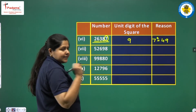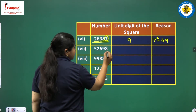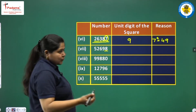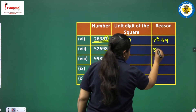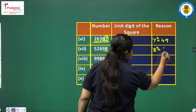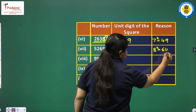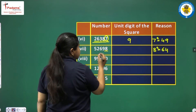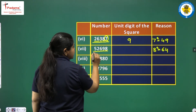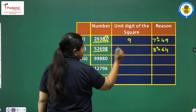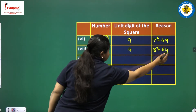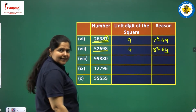For 52,698, the ones place digit is 8. Squaring this number: 8 squared is 64. So the ones place digit of this complete number's square will be 4.